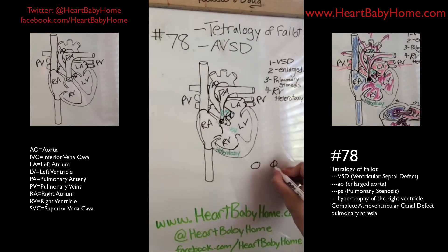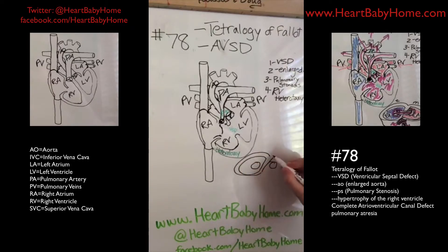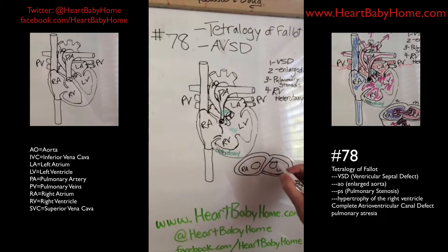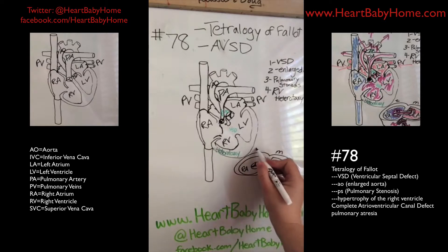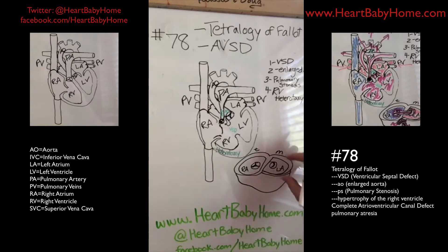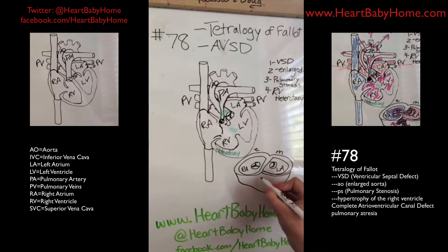You have your septal wall between the chambers. This is your left atrium and this is your right atrium. Here's your tricuspid valve on the right side and your mitral valve on the left side. Your aortic valve would be down here and your pulmonary valve down here as well.